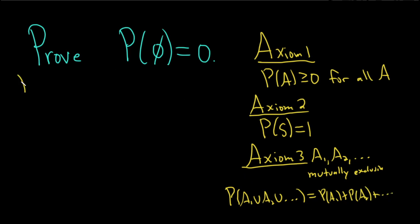So, proof. Let's see if we can figure it out. We have the empty set, or the impossible event, and we need to show it's equal to 0.